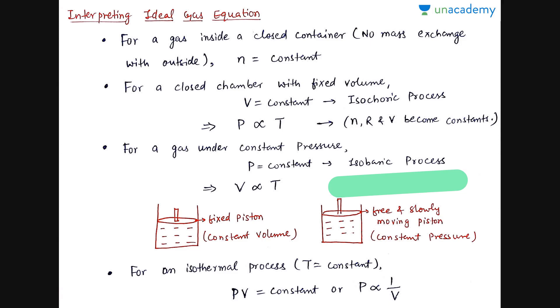Now if it is given in a process question specifically that the temperature is constant, then it means that it is an isothermal process. And in the isothermal process, n constant, T constant, R constant, i.e. PV is constant. We can say that P is inversely proportional to V.